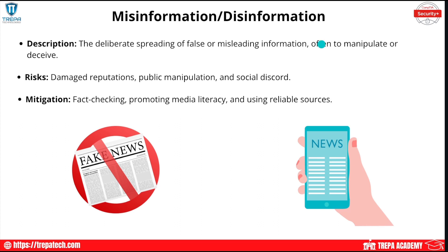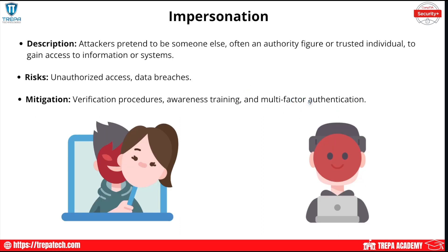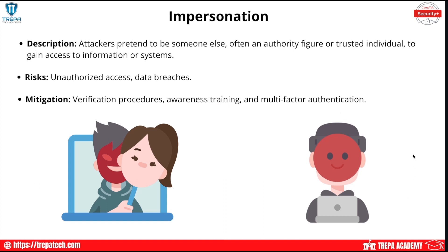Impersonation is a social engineering principle where attackers pretend to be someone else — often an authority figure or trusted individual — to gain access to information or systems. The risk is unauthorized access or data breaches. It goes hand-in-hand with phishing, vishing, and smishing attacks. Mitigation includes verification procedures and awareness training. Two-factor authentication is also a great mitigation: even if someone tricks you into giving up your credentials over the phone, they still can't log in without the 2FA code.